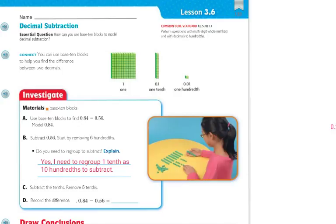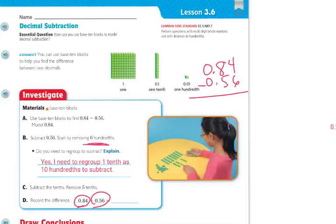Let me do this over here and line it up. I'm going to take 0.84 and subtract 0.56. Very important that I line up the decimals. I have to regroup because I can't take 6 from 4. So I'm going to make this be a 7, and this is going to be a 14. Then 14 minus 6 is 8, 7 minus 5 is 2, and I put my decimal. So my answer is 0.28, or 28 hundredths.